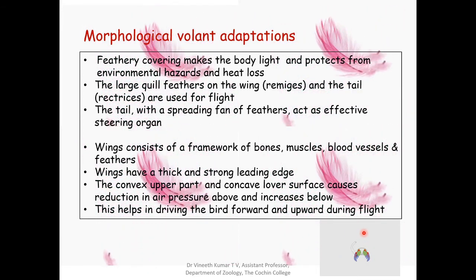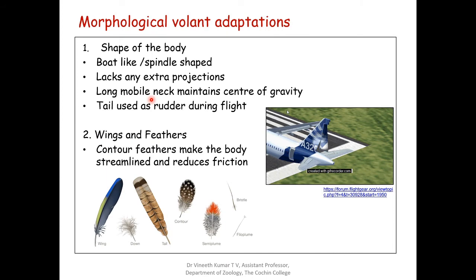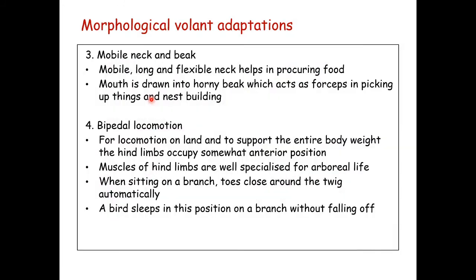That is how the wings act — this is the second morphological volant adaptation: wings and feathers. Moving on to the third, the mobile neck and beak: the long and flexible neck helps in procuring food. The mouth is drawn into a horny beak which acts as forceps for picking up grains and also for nest building. Because birds do not use their forelimbs for procuring food, their neck is well adapted for that purpose.